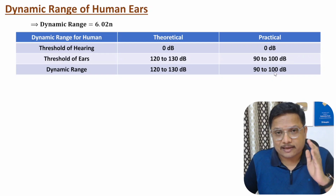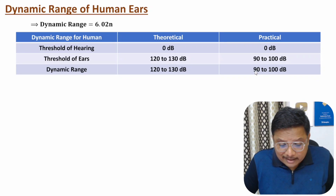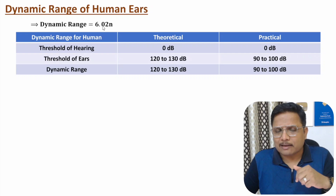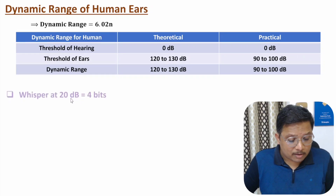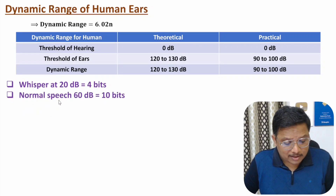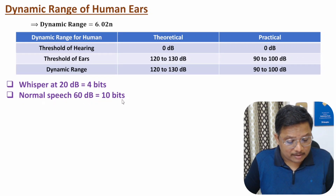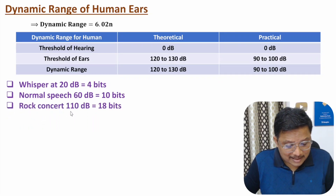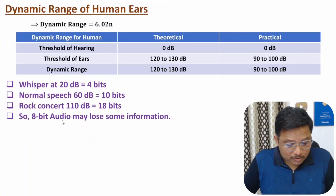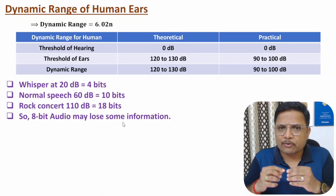Based on this practical range, if you quantize the signal, 90 divided by 6 tells us we need about 15 bits per sample. Let me give some case studies: the voice of a whisper is at 20 dB, so it should be quantized at 4 bits per sample. Normal speech is at 60 dB, so it should be quantized at 10 bits per sample. A rock concert is at 110 dB, so the signal should be quantized at 18 bits.